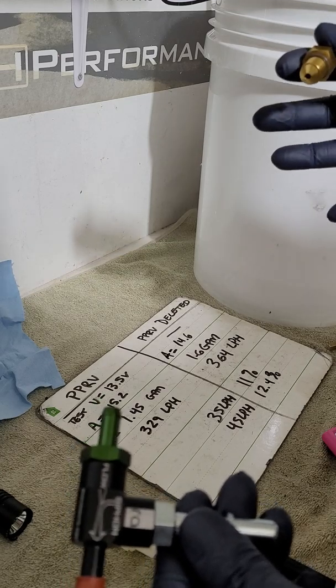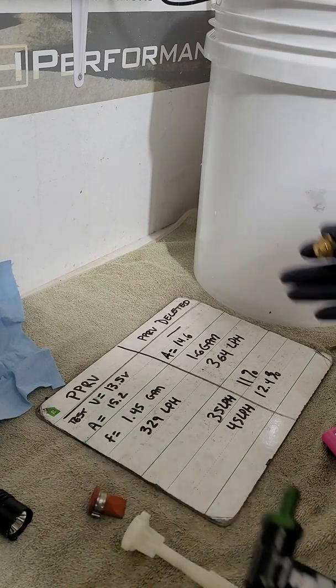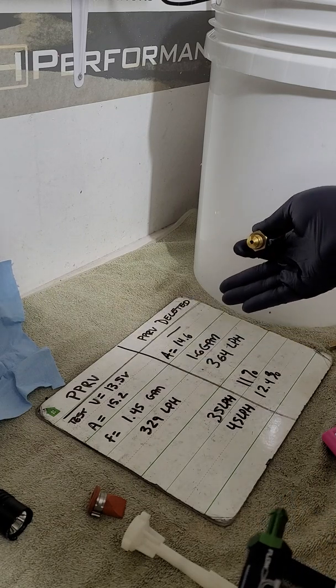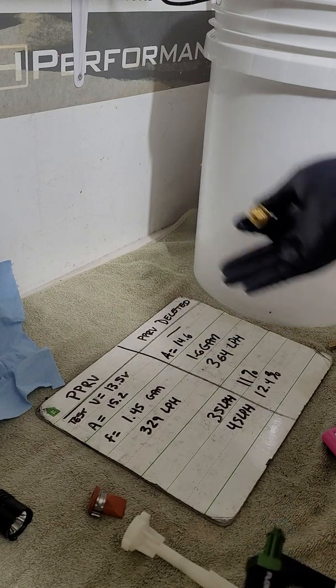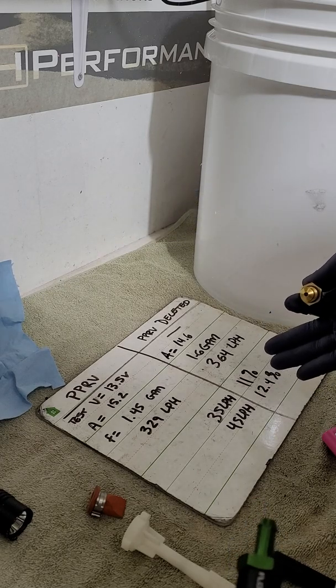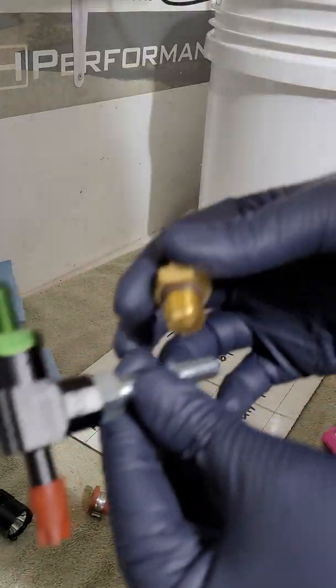So what I'll do is test that return hat with the pump. I already delete the PPRV because there's no reason to keep it in a return system. I know it's a restriction, this proves that the PPRV is a restriction, and the pump drew less amps. It's not working as hard, and you gain flow deleting it.